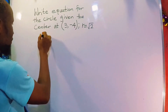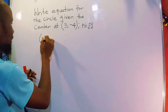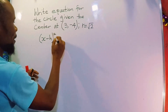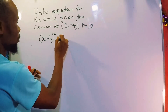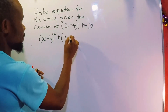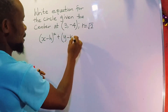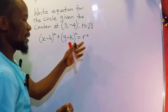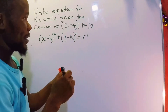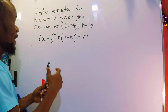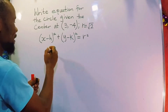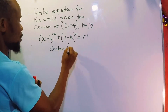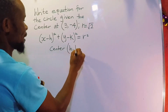So you have (x minus h) squared plus (y minus k) squared equal to r squared. So this r is the radius. In this case, the center here is h, k.